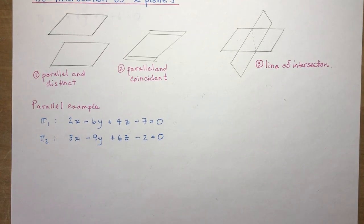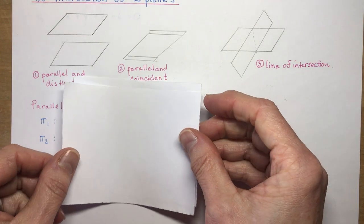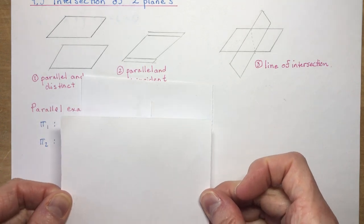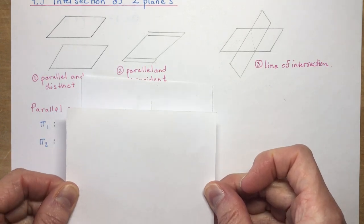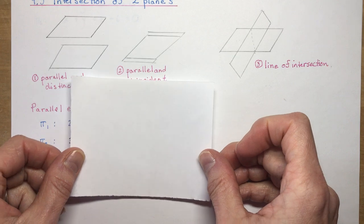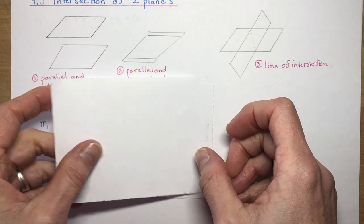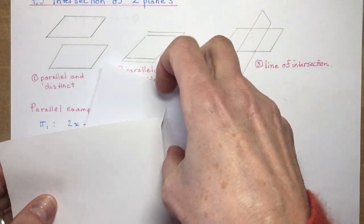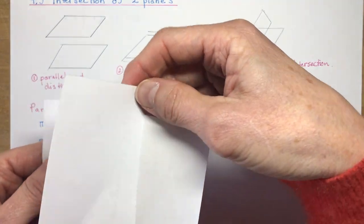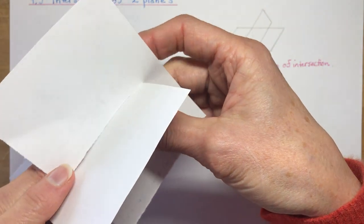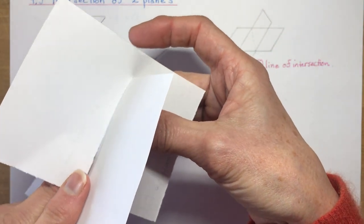9.3 Intersection of Two Planes. We have three possibilities: two planes can be parallel and distinct, so they never intersect; they could be parallel and coincident, placed on top of each other; or the third possibility is that the planes intersect like this, along a line — a line of intersection.